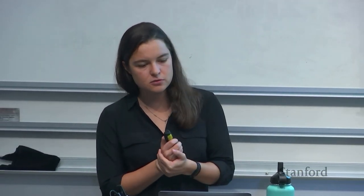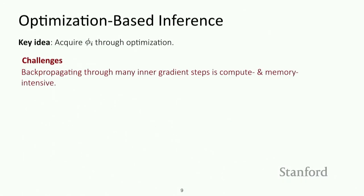One more challenge worth going into depth on is that backpropagating through many inner gradient steps is very compute-intensive and memory-intensive. If you have one or a few inner gradient steps, it's quite practical to backpropagate through them. But if you have an extended optimization process in the inner loop, it's very challenging to backpropagate through that without storing the entire optimization process in memory.